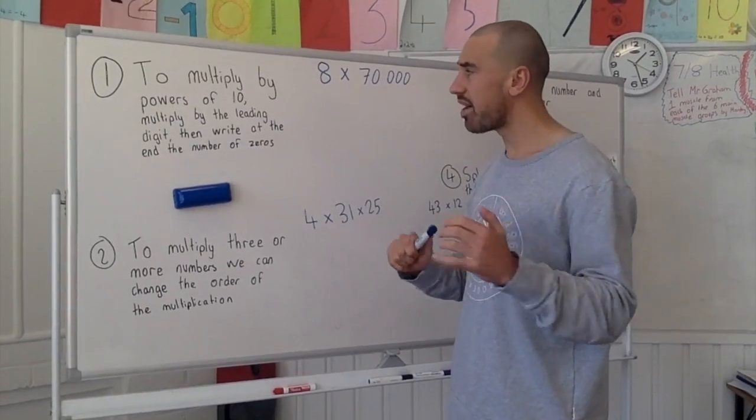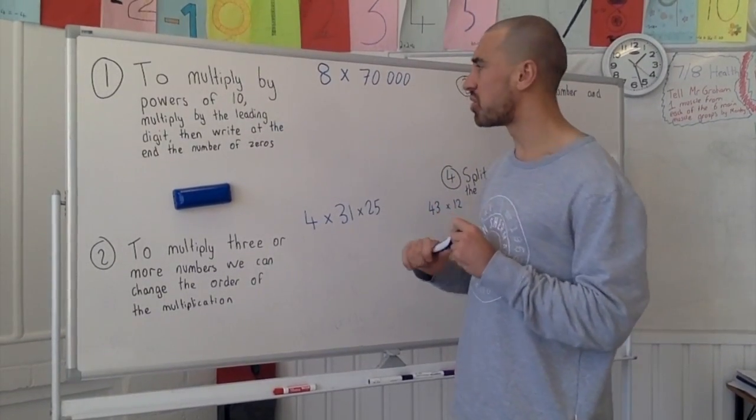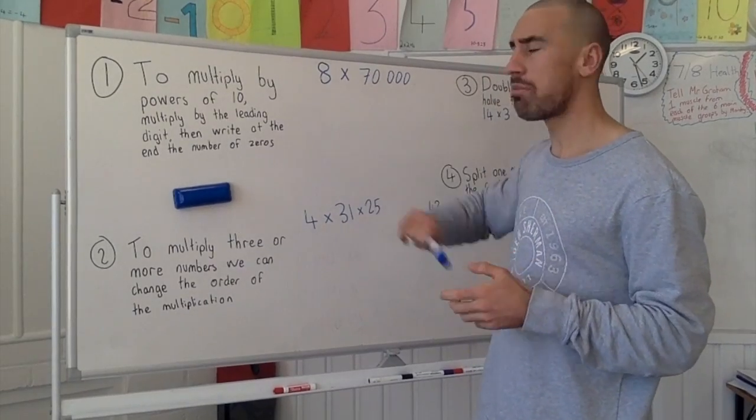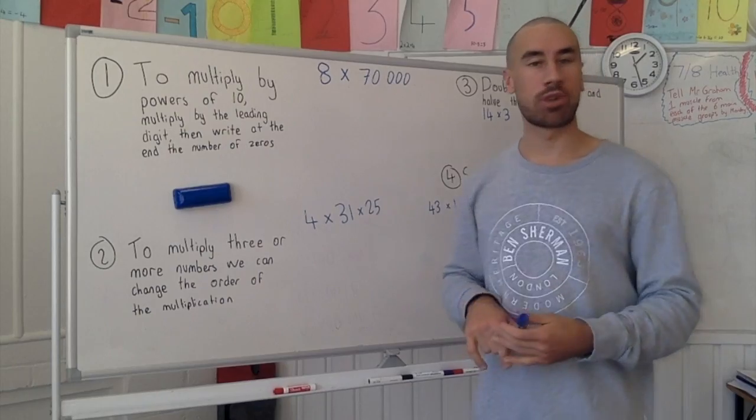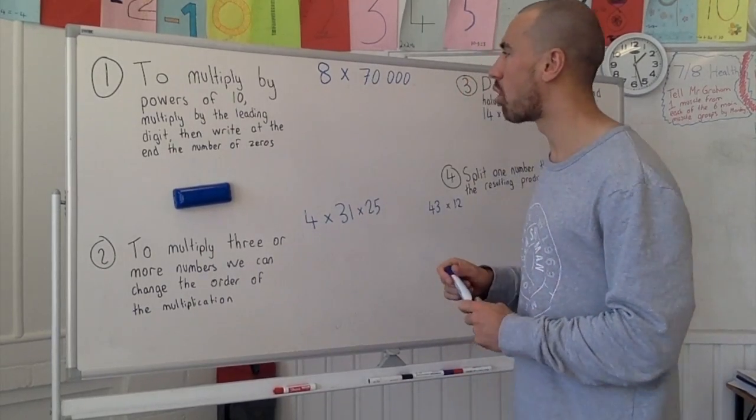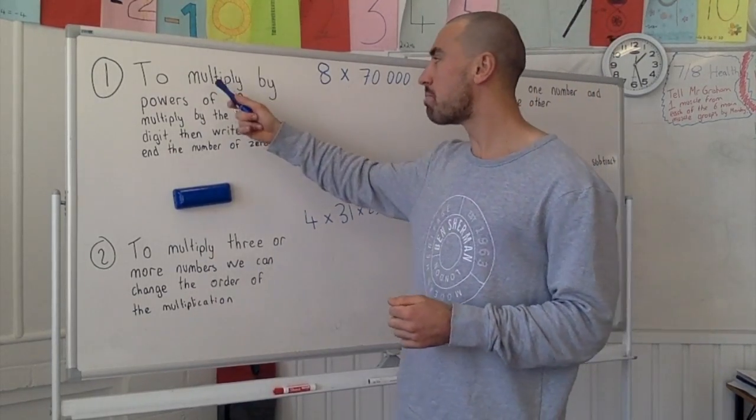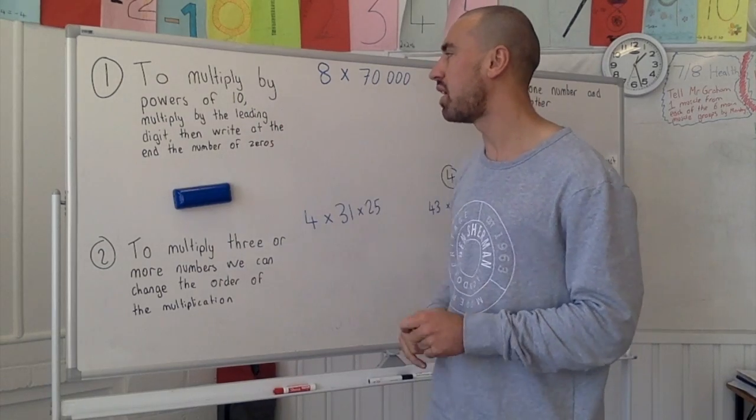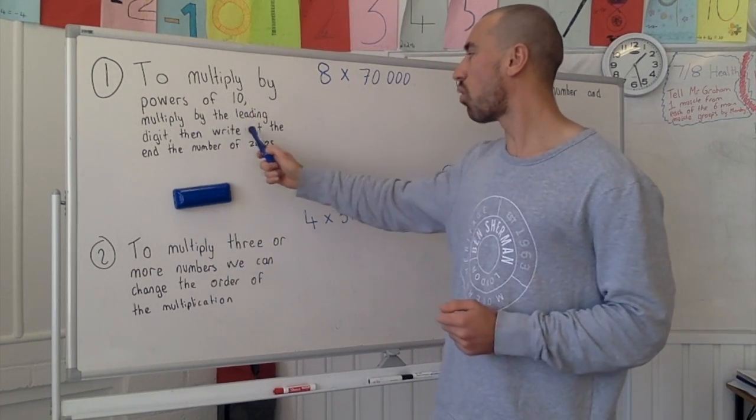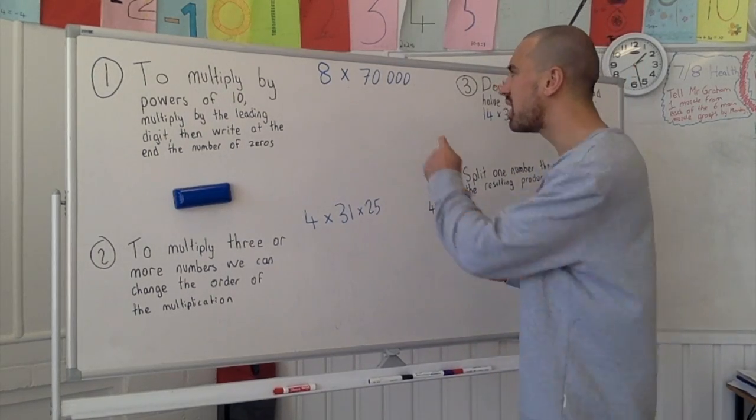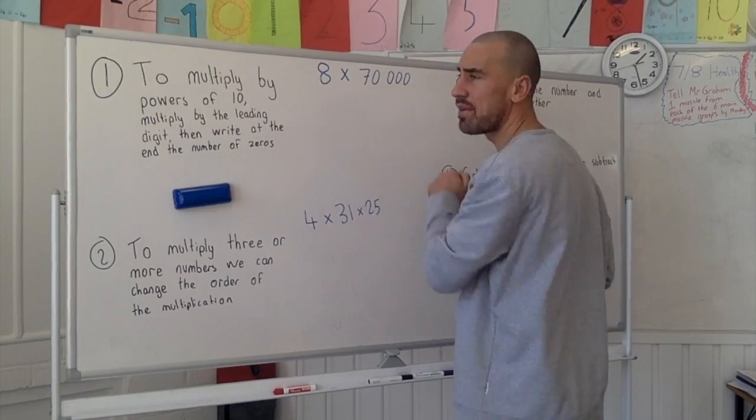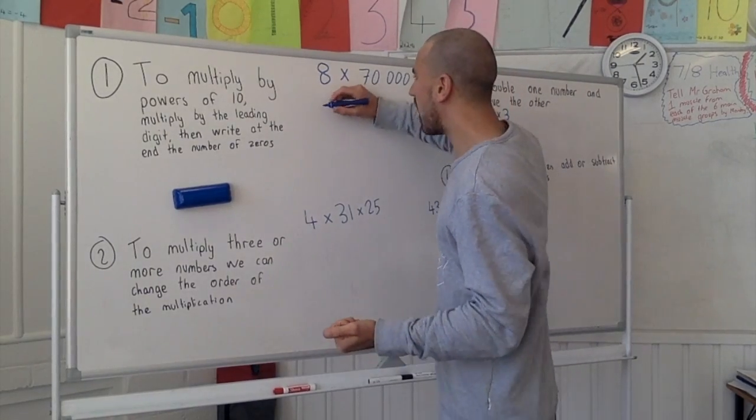Hopefully you can use these four multiplication strategies to help you solve these problems. Let's have a look at our first strategy. Now I wrote these up on the board prior to recording this video so you did not have to go through the pain of watching me trying to write. First strategy: to multiply by powers of 10, multiply by the leading digit then write at the end the number of zeros. So what that means here, instead of going 8 times 70,000, we'll change that and we would write 8 times 7.